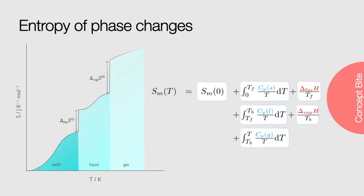We can look at how the total entropy of the system changes as a function of temperature. The total entropy of the system is the residual entropy, or entropy still remaining at 0 Kelvin, plus the entropy of heating from absolute 0 to the melting temperature. Then we see a clear step in the entropy of the system, as there is the phase change of melting. Then we have the increase in entropy as we increase the temperature of the liquid between the freezing and boiling point. Then the entropy change of boiling, followed by the entropy of the gas as its temperature increases from the boiling temperature.